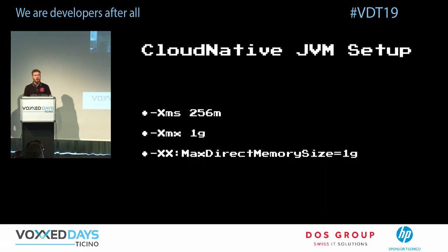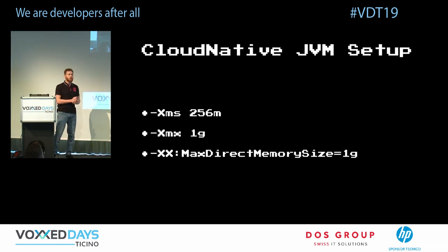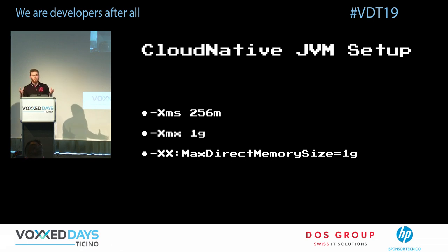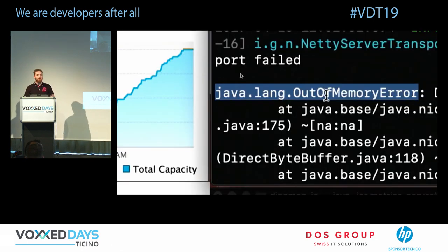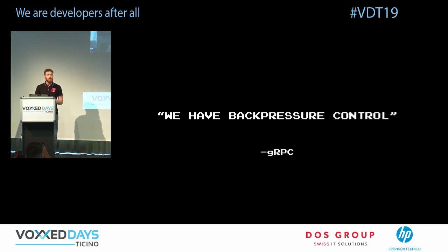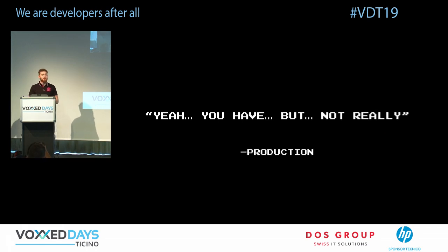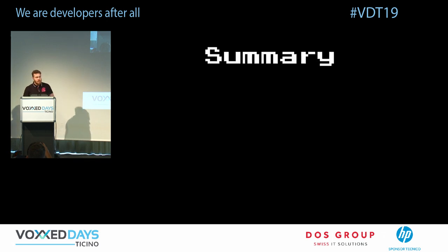In a local application that might be fine, but in the cloud native era we provide only a limited number of megabytes to Docker or Kubernetes containers. The next thing that can happen to your app is out-of-memory — and that's something we don't want in production. So gRPC has some back pressure, but it's not ready for real production cases.